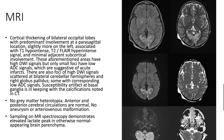On MRI, we see cortical thickening of the bilateral occipital lobes with predominant involvement at a parasagittal location, slightly more on the left, associated with hyperintense signal on FLAIR as well as on T2. The aforementioned areas have high DWI signal, but only small foci have low ADC signals, suggestive of acute infarcts.